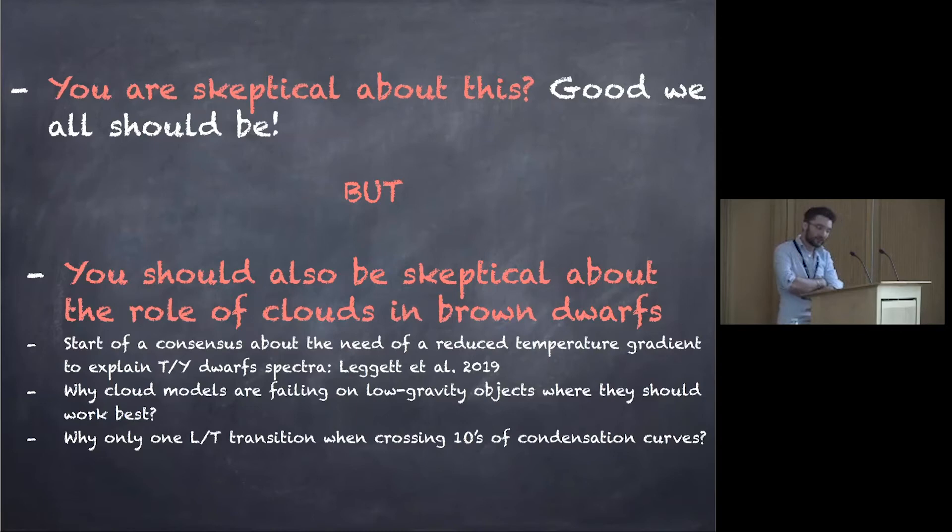But I think it's also needed now to be a bit skeptical about the role of clouds in brown dwarf, because there starts to be many problems. So I think there starts to be a consensus that there is a need for a reduced temperature gradient to explain the spectrum of the T dwarf, the recently JWST paper.